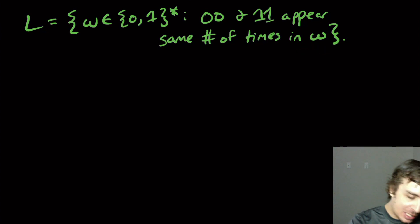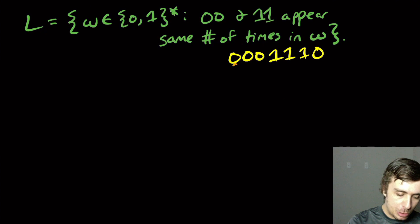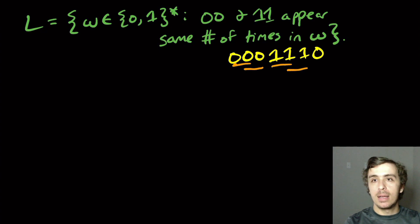So as an example, if we look at the string 0001110, let's count the 00 occurrences. There's one right there, there's one right there—they can be overlapping possibly. There's a 11 there and a 11 there. Since there are two occurrences of each, therefore this string is in the language.